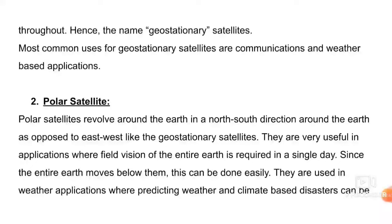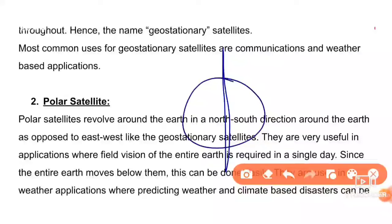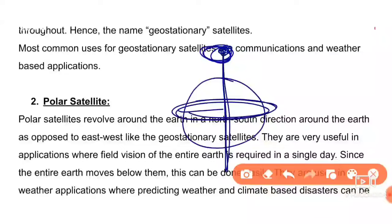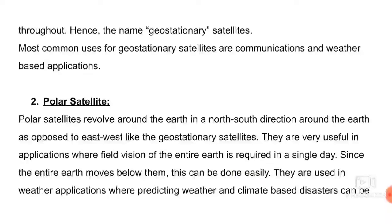The next type is polar satellites. Polar means the satellite is set near the pole — we know the earth has an axis around the poles. If we set the satellite near the top pole, it becomes a polar satellite. Polar satellites revolve around the earth in a north-south direction, as opposed to the east-west direction of geostationary satellites.